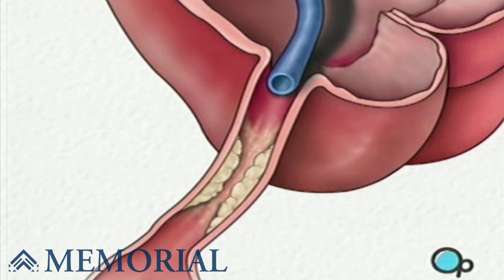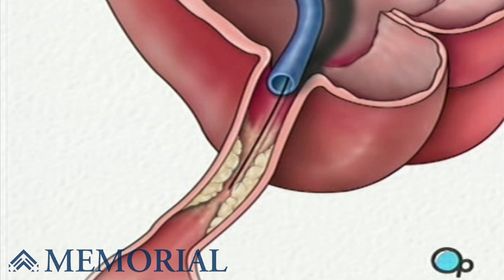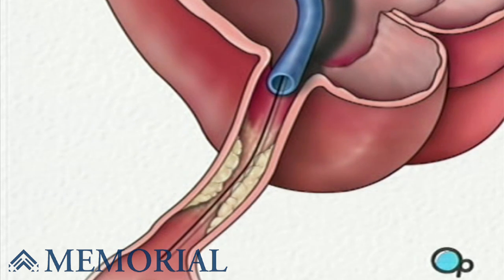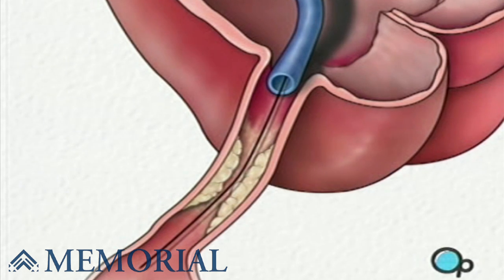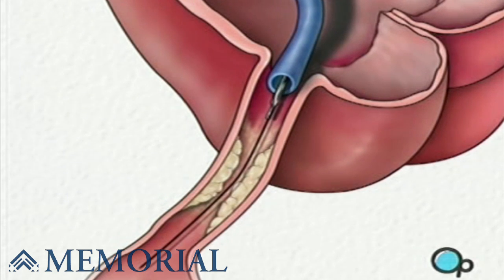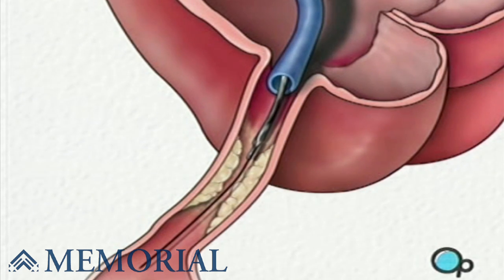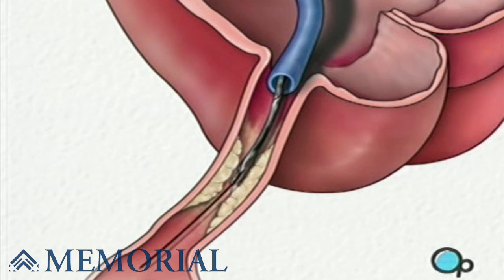Once the restricted area has been identified, a thin wire is inserted into the catheter and is guided all the way to the blocked area and then slightly beyond. This wire acts as a guide for the balloon catheter, allowing your doctor to position the deflated balloon precisely in the middle of the narrowest part of the coronary artery.